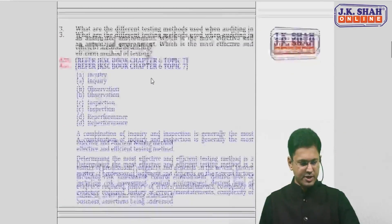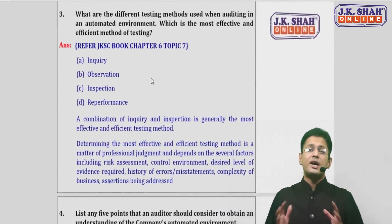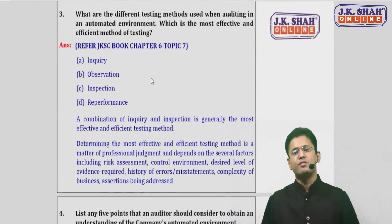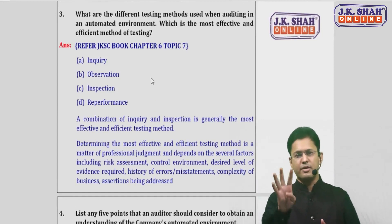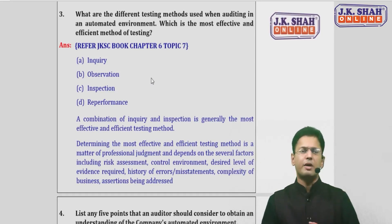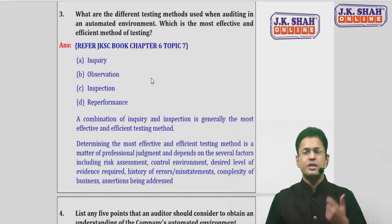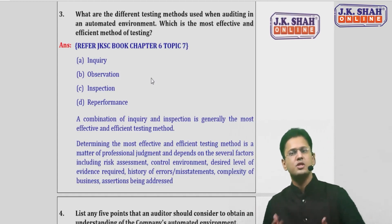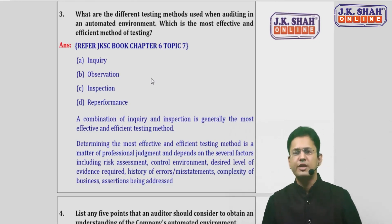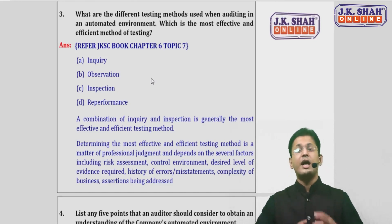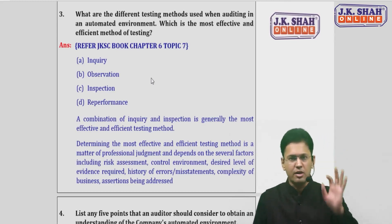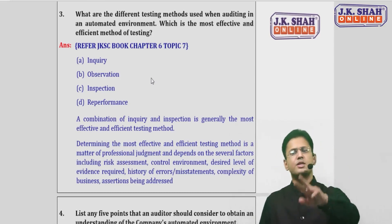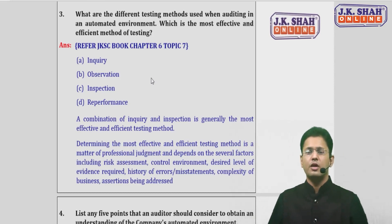The next question: what are the different methods used when auditing in an automated environment, and which is the most effective and efficient method of testing? There are four techniques the auditor uses. The first is inquiry. The second is observation — observing different users and how they process transactions. The third is inspection — inspecting the configuration of the system, inspecting logs if maintained. The fourth is re-performance — re-performing transactions and calculations already done by the system.